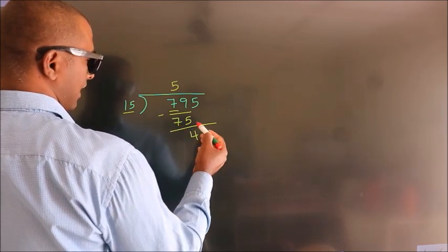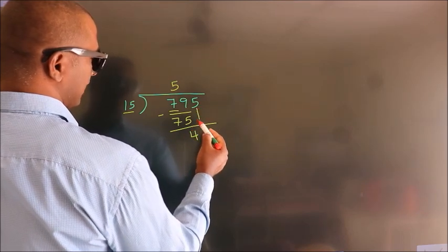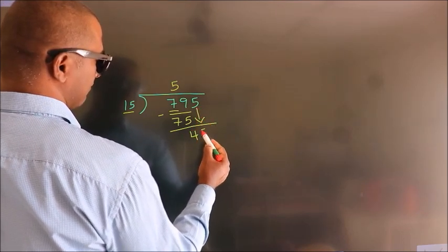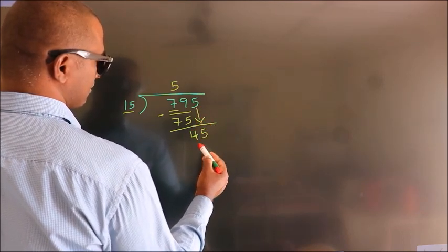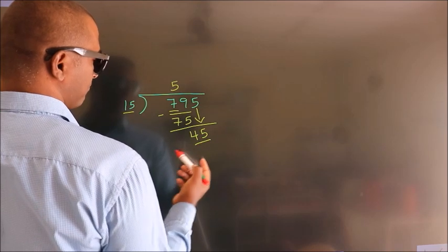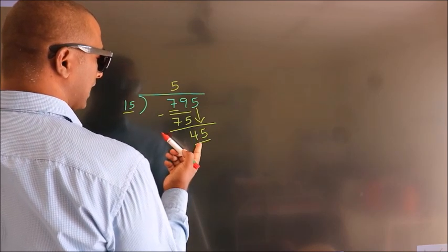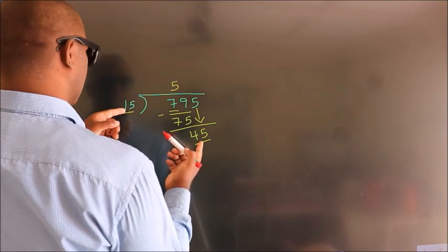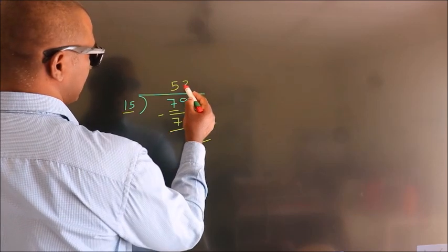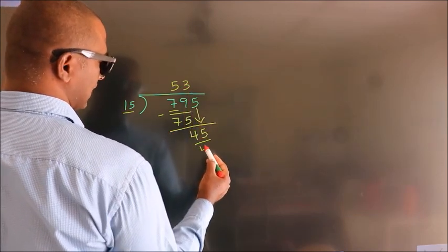After this, bring down the beside number. So 5 down, making 45. When do we get 45 in the 15 table? 15 threes is 45.